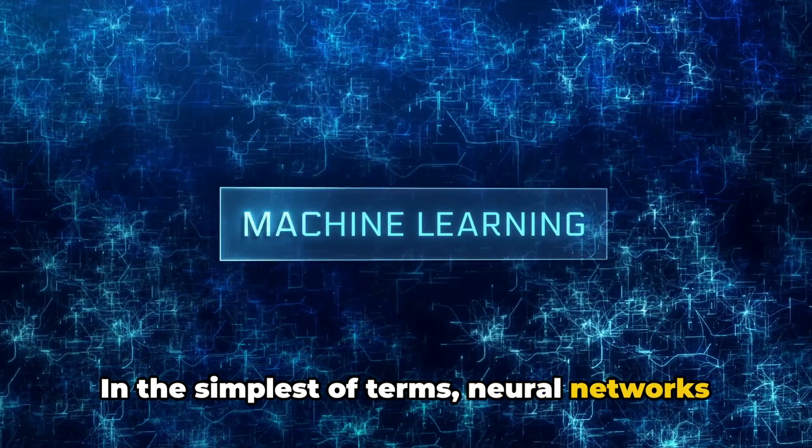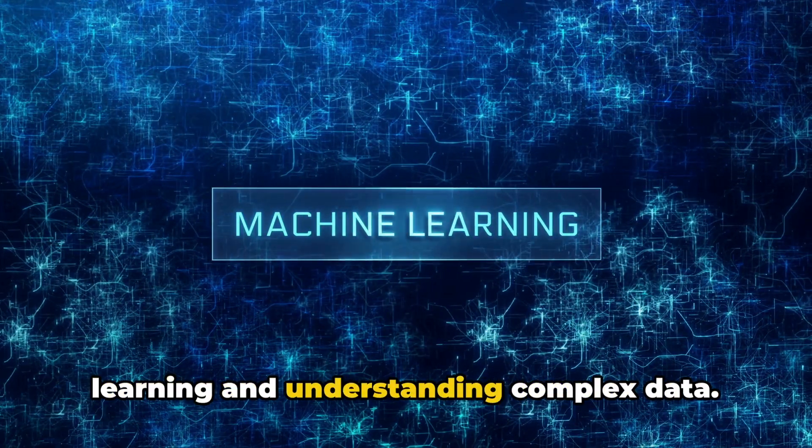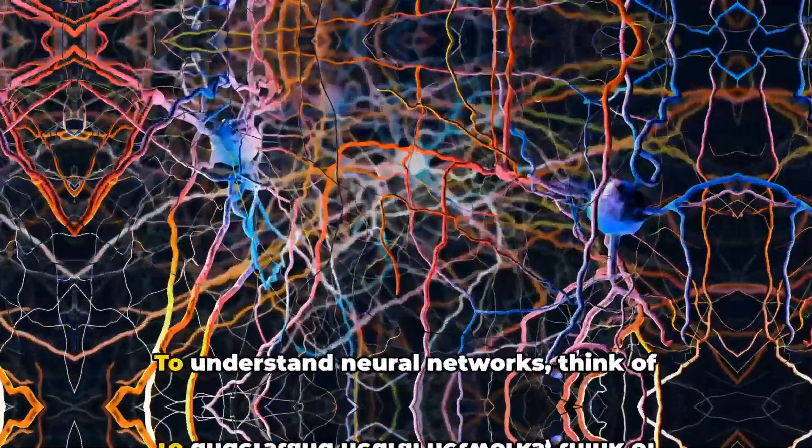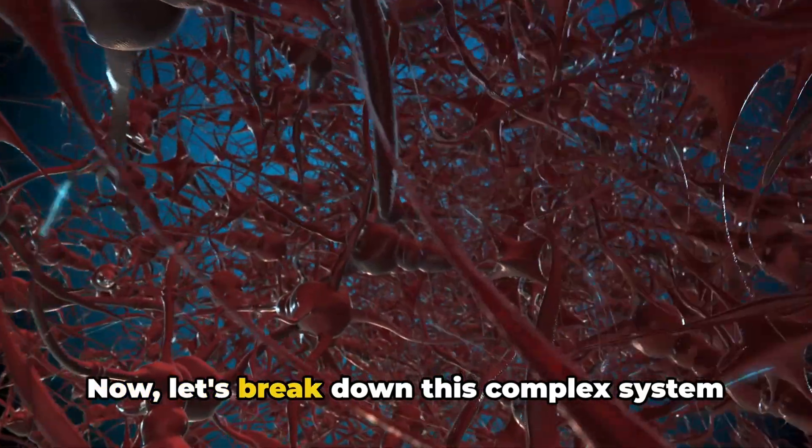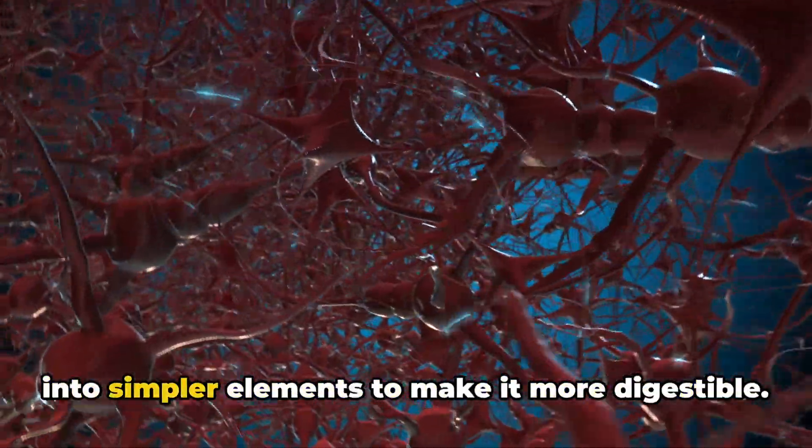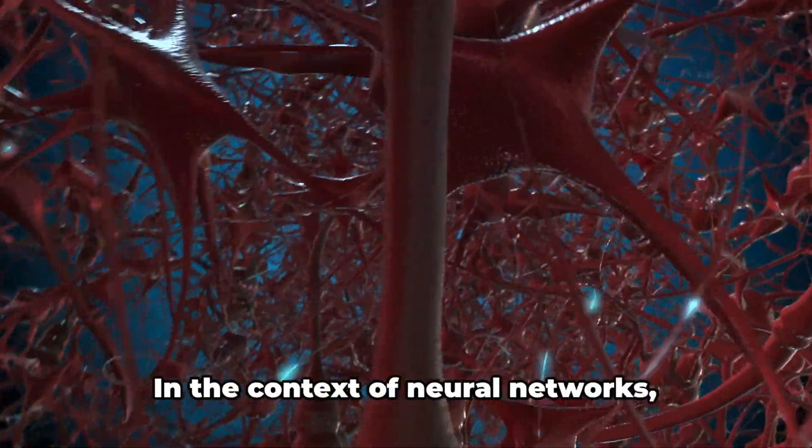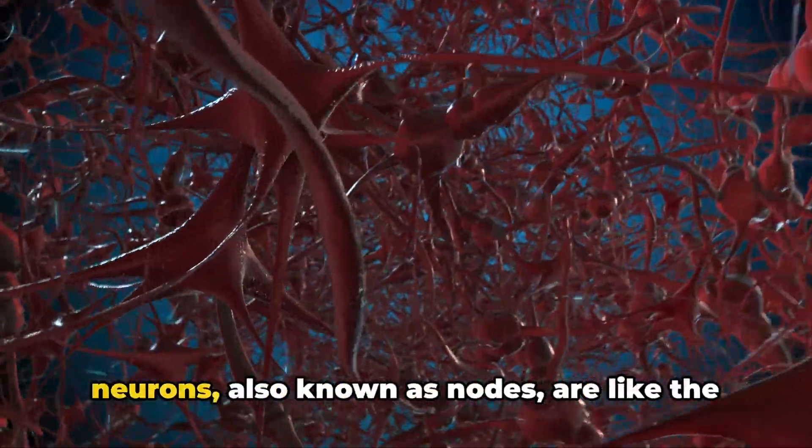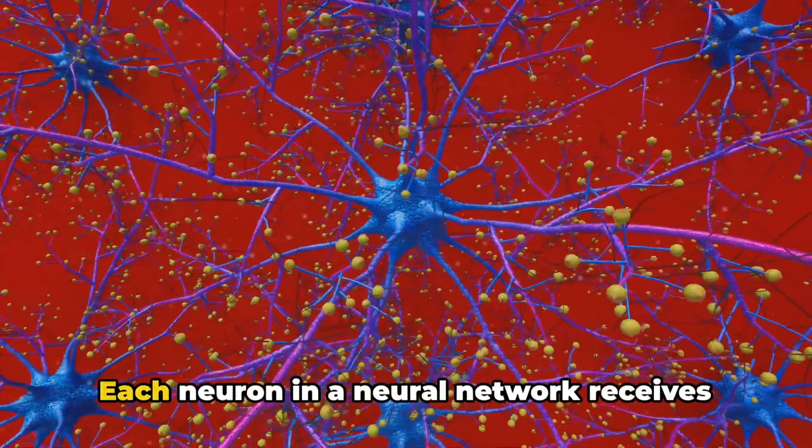In the simplest of terms, neural networks are the brain of a computer, capable of learning and understanding complex data. To understand neural networks, think of it as a system of neurons like the ones in your brain. Now let's break down this complex system into simpler elements. First up, we have the neurons. In the context of neural networks, neurons, also known as nodes, are like the nerve cells in your brain.